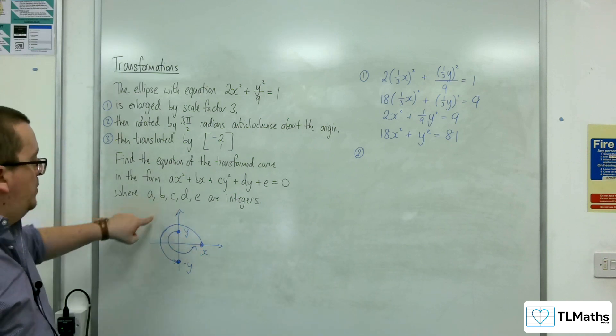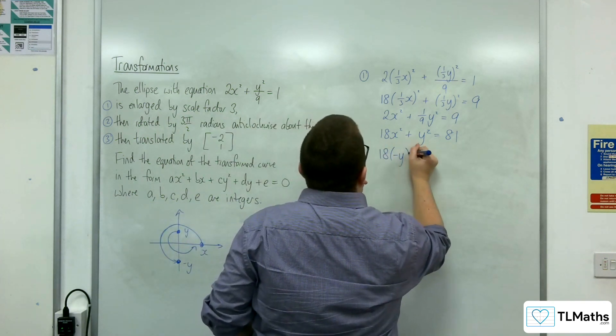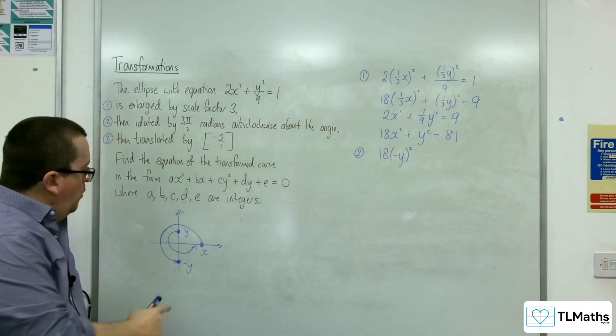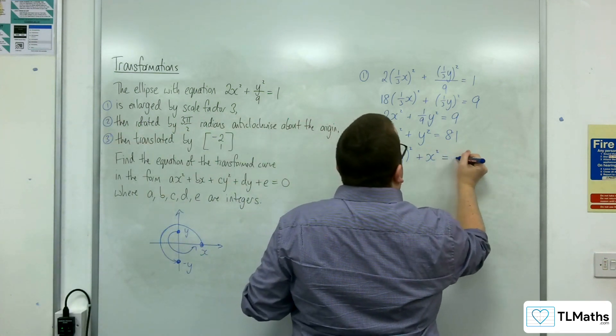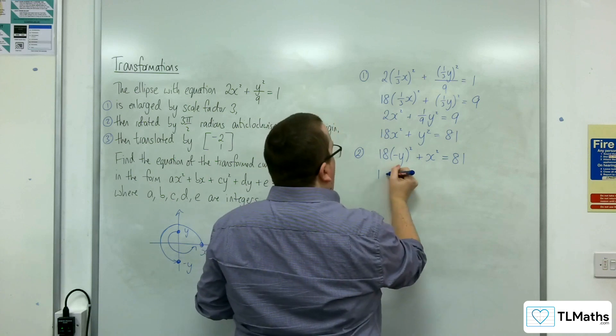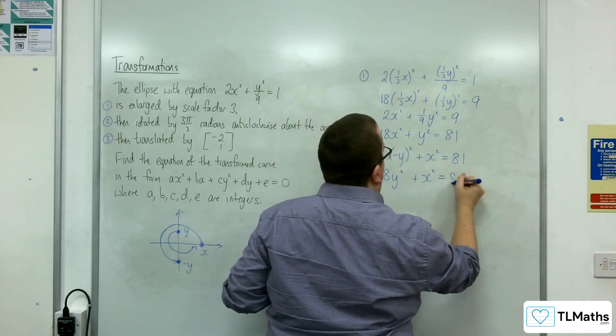So x's are replaced with minus y. So 18 lots of minus y squared. And the y is replaced with x. So plus x squared equals 81. So that's just going to give us 18y squared plus x squared equals 81.